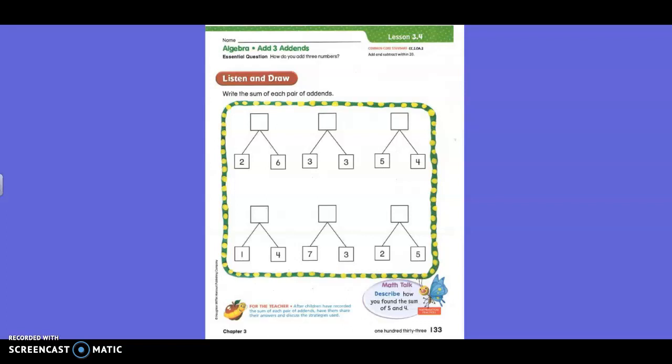Okay, so two and six make what? Grayson? Okay, write it down. Three and three make what? Grayson? Five and four make what? Sander? Nine. One and four make what? Dias? Five. Seven and three make what? Finley? Seven. And two and five make what, Ivan? Seven.